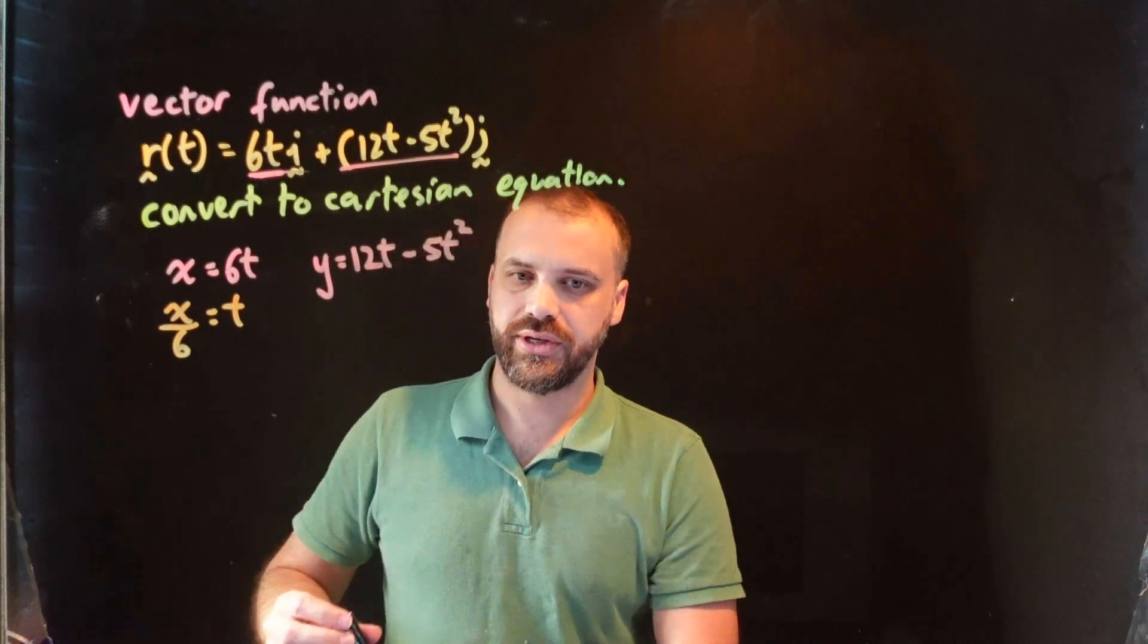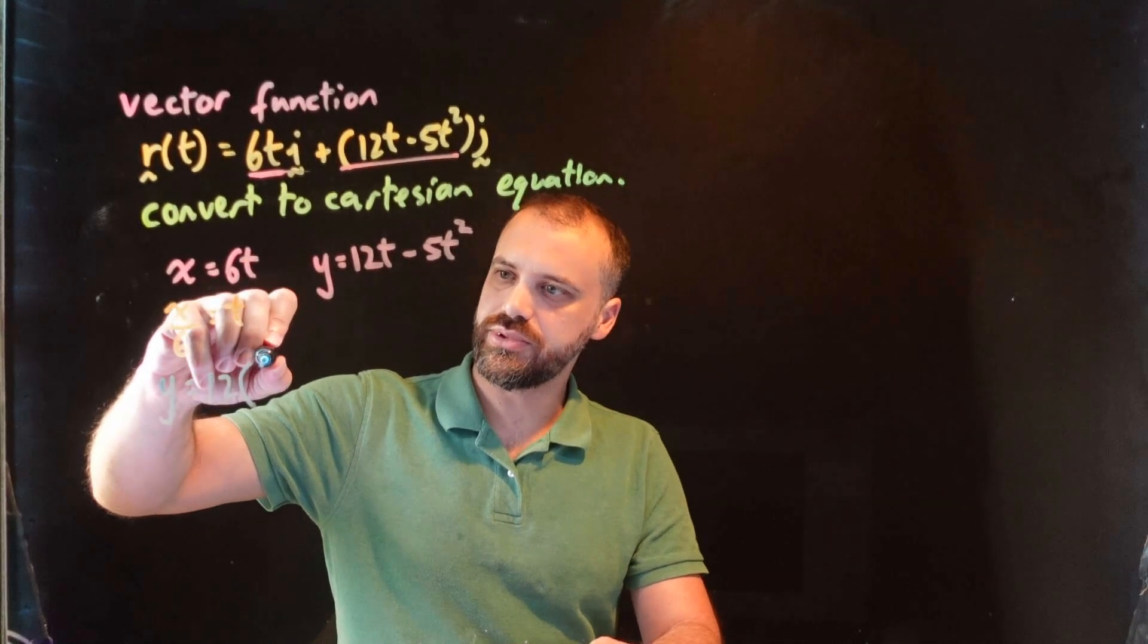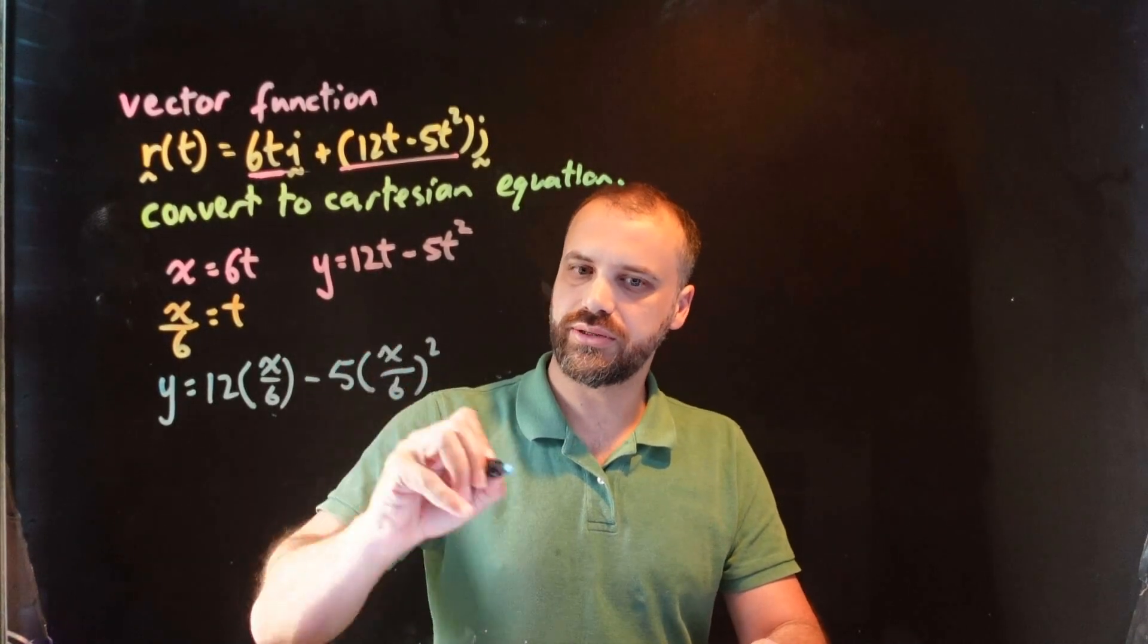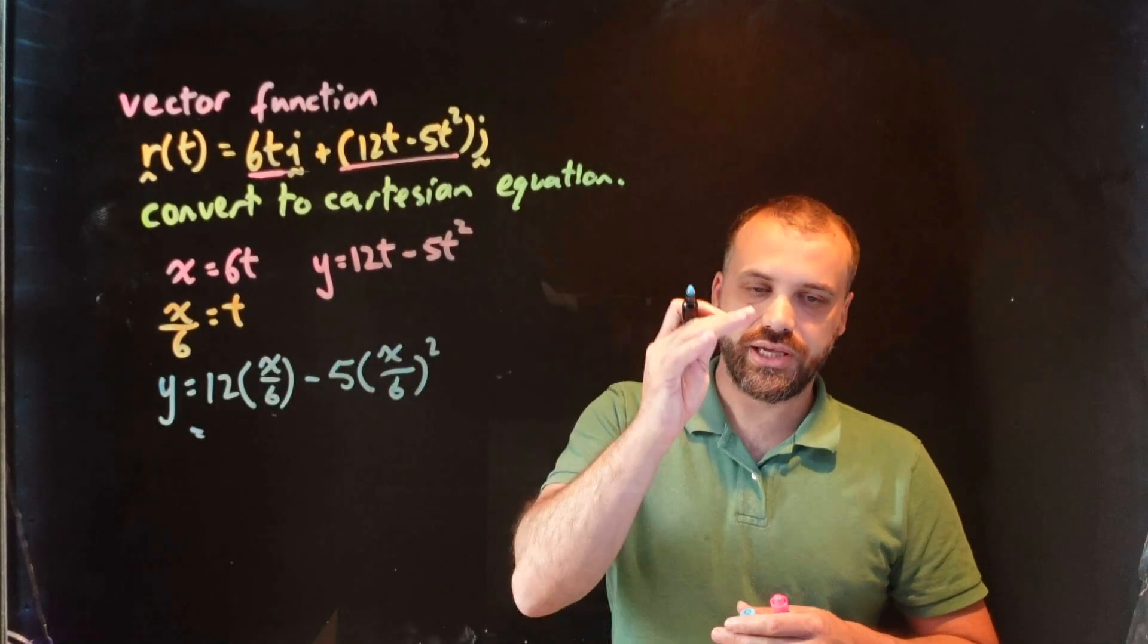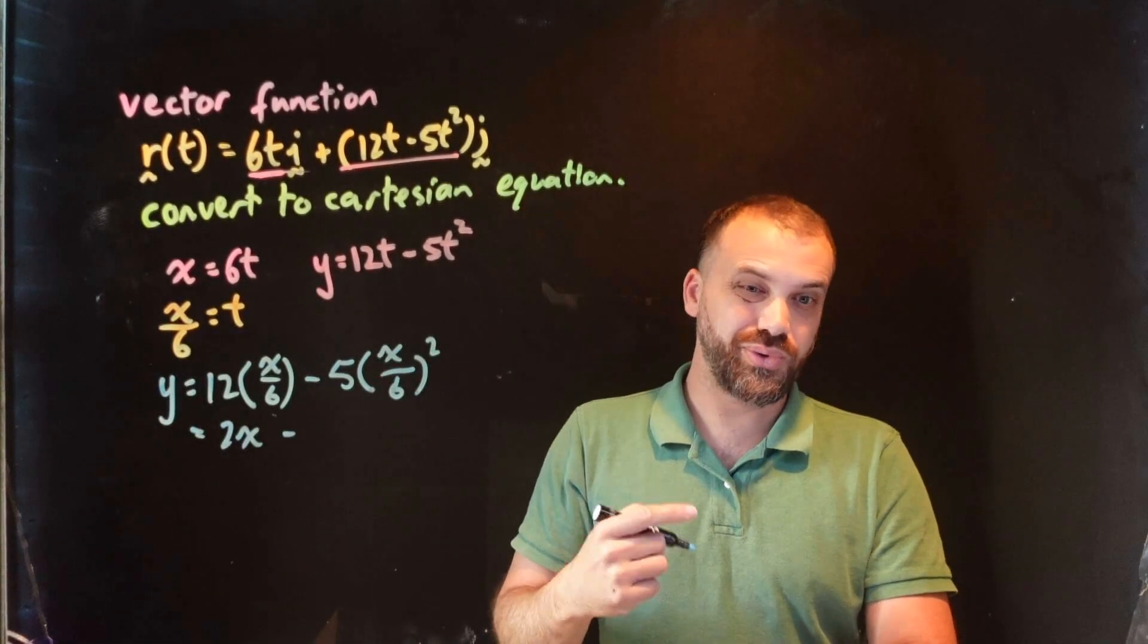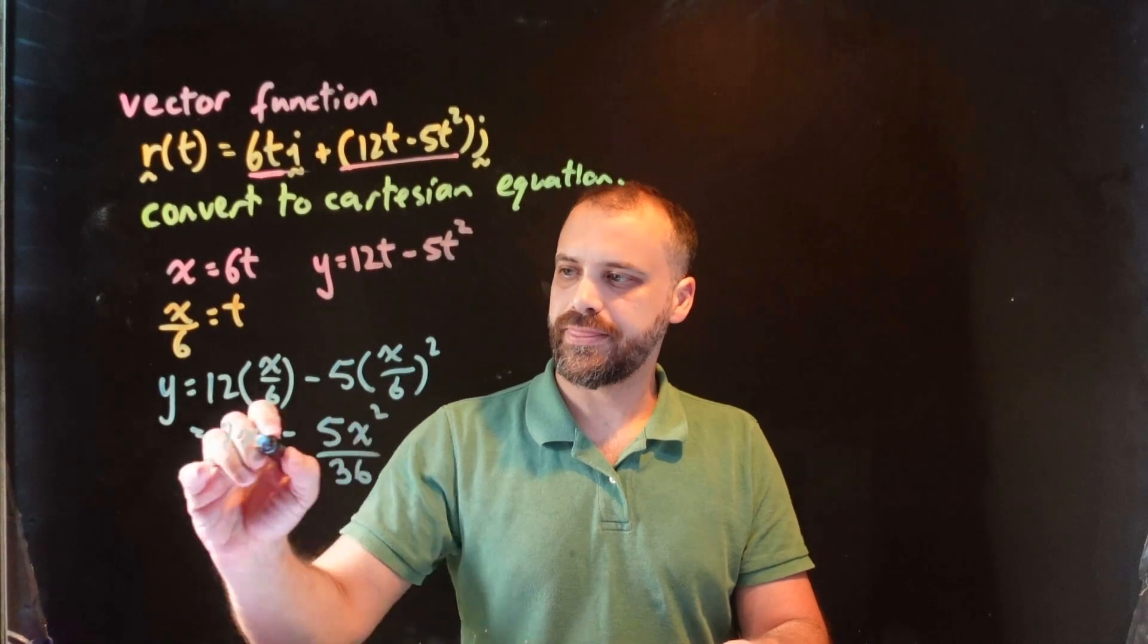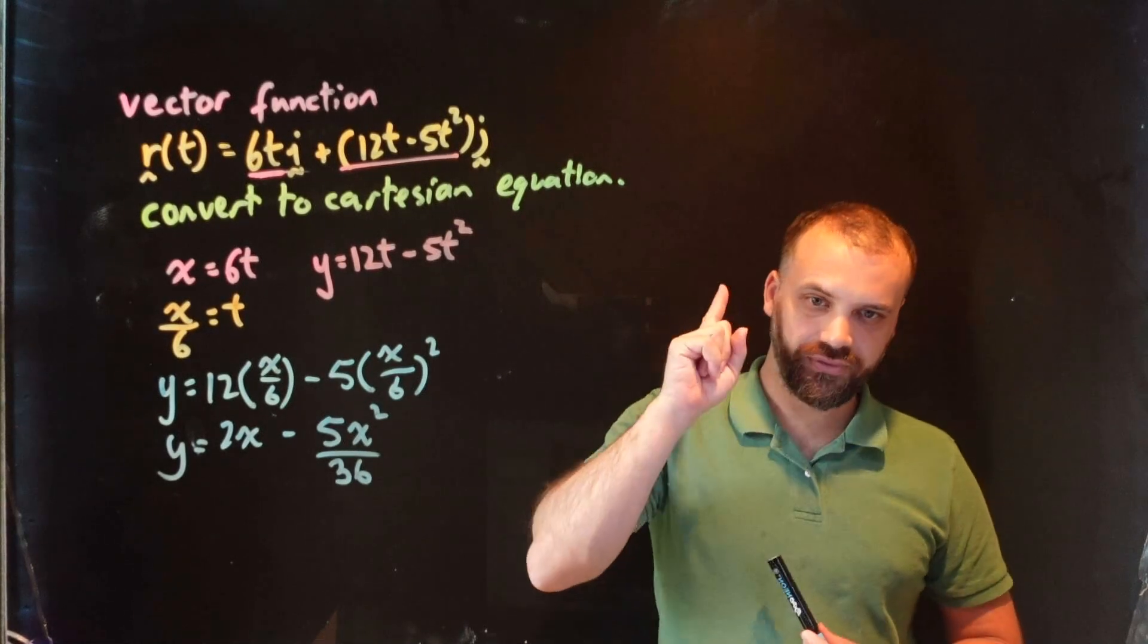And now, I can take this and sub it into this equation for t. Alright. So, let's do that. We can now say that y equals 12 times x over 6 minus 5 bracket x over 6 squared. Okay. 12 times x over 6, that's 2x, and then this is x squared over 36. So, we get 5 times x squared over 36. We have finished.